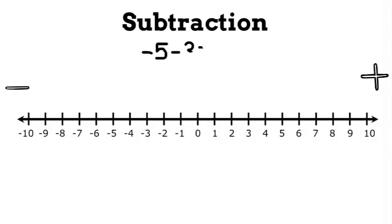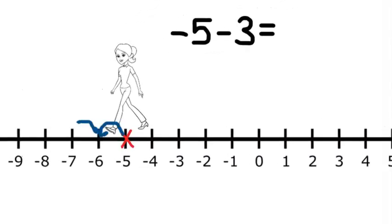Let's check out subtraction now. Negative 5 minus 3. So for our number line, we want to start at negative 5. We're subtracting this time, so we want to face the minus sign. And we're subtracting a positive number 3, so we want to walk forward three spaces. We land on negative 8, so our answer is negative 8.